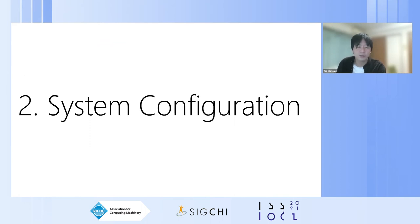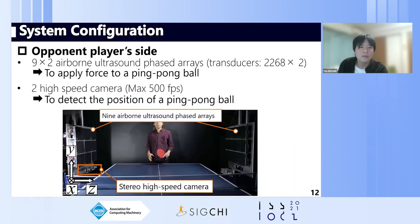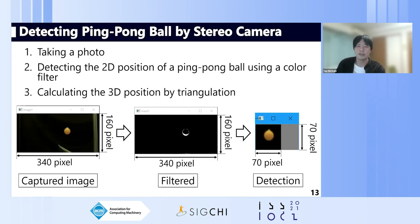Now the system configuration and evaluation in detail. On the opponent player's side, the system consists of an airborne ultrasound phased array and two high-speed cameras. The phased array applies force to the ping-pong ball, and the stereo high-speed cameras detect its position. The detection flow works as follows: each camera takes a photo, the system detects the two-dimensional position of the ball using a color binary filter, and finally calculates the three-dimensional position by triangulation.